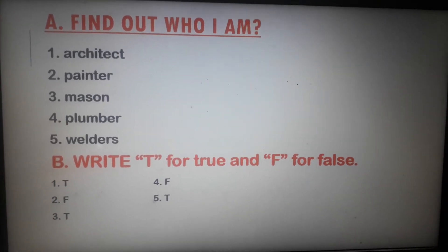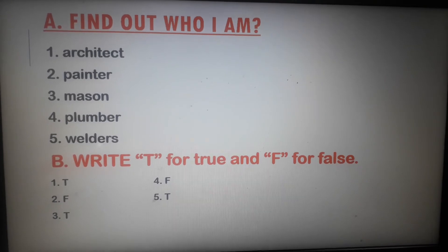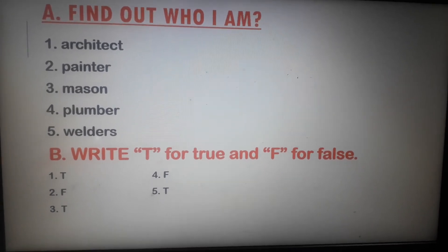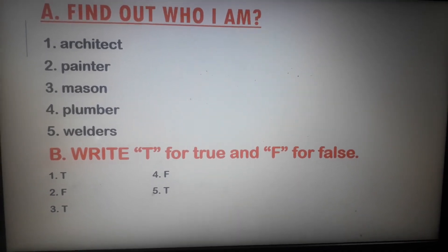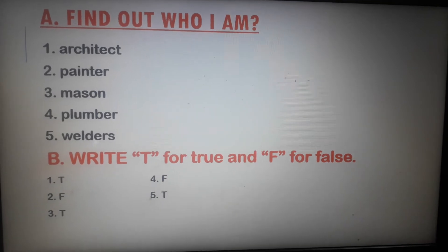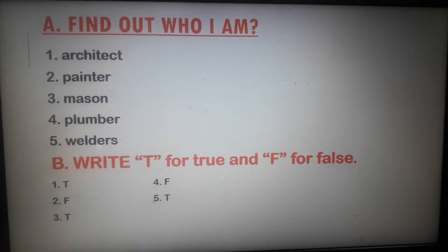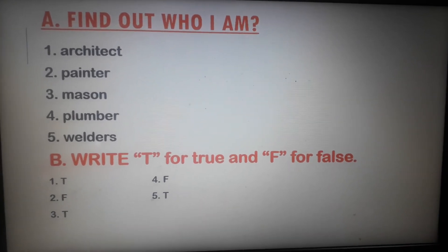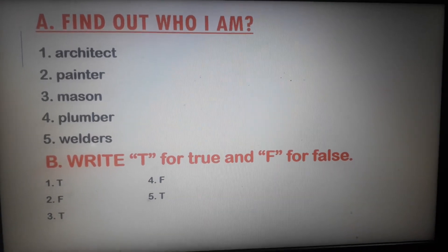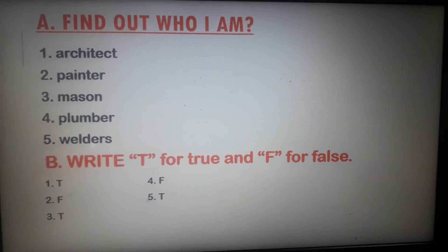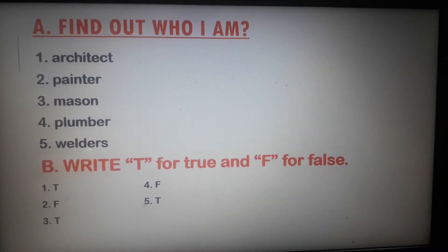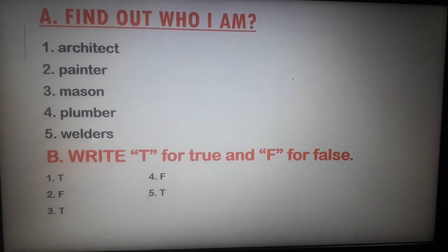Exercise B: Write T for True and F for False. Number 1 — The sun-dried bricks are baked in an oven. Answer is True. Number 2 — Bricks take about 6 hours to pass completely through the kiln. Answer: False.